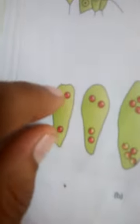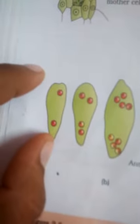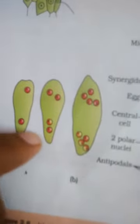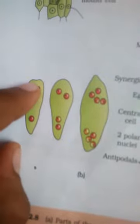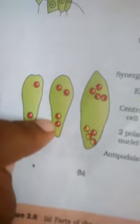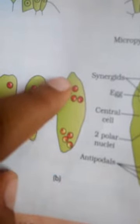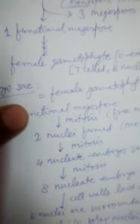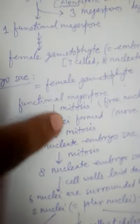After the first mitosis, two nuclei move towards opposite poles. After a second free nuclear mitosis, from each nucleus two nuclei form, giving a four-nucleate embryo sac stage. After a third round of free nuclear mitosis, you have an eight-nucleate embryo sac stage. So after three rounds of free nuclear mitotic division, an eight-nucleate embryo sac stage is formed.